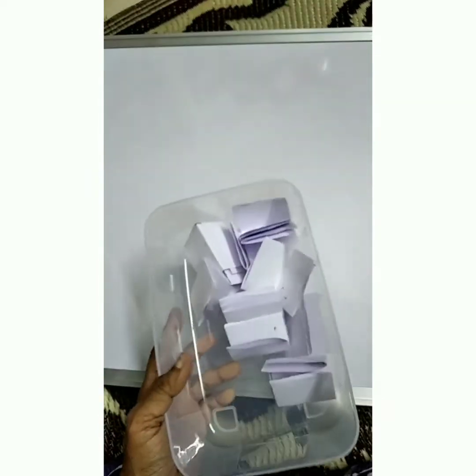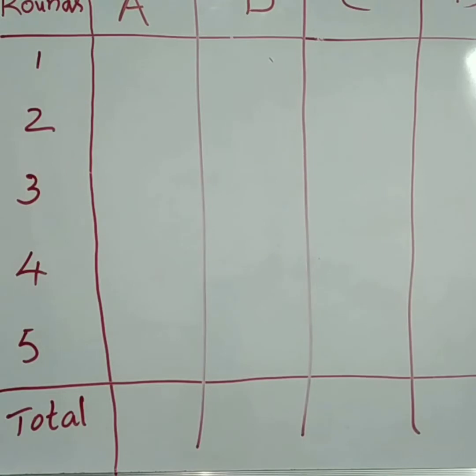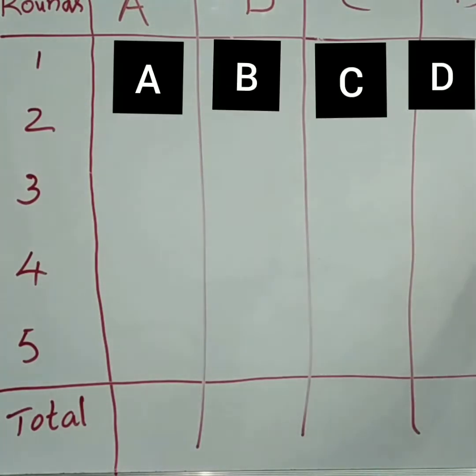Now we can start the game. Here our players are ready. Hi, this is Akshay. Hi, this is Saranya. Hi, this is Kanika. Hi, this is Karthik. Here A is Akshay, B is Saranya, C is Kanika and D is Karthik. Okay, let us start the game.